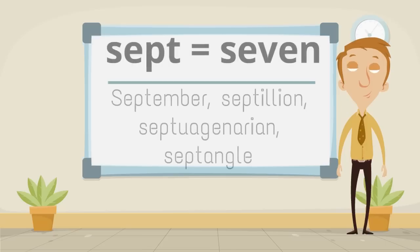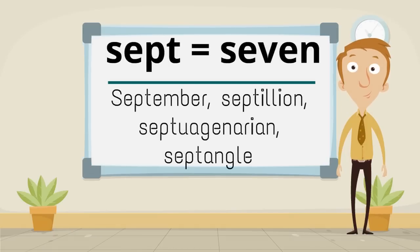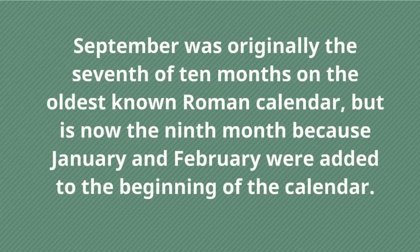Sept, meaning seven, makes the words September, septillion, septuagenarian, and septangle. September was originally the seventh of ten months on the oldest non-Roman calendar, but is now the ninth month because January and February were added to the beginning of the calendar.